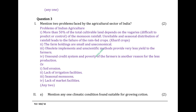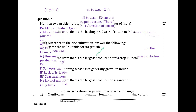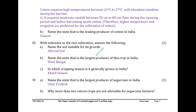Mention any one climatic condition suitable for growing cotton. Cotton requires high temperatures between 21°C to 27°C, with abundant sunshine during the harvest. It requires moderate rainfall between 50 cm to 80 cm. Rain during the ripening period and before harvesting spoils cotton; therefore, higher temperature and irrigation are preferred. The leading producer of cotton in India is Gujarat.